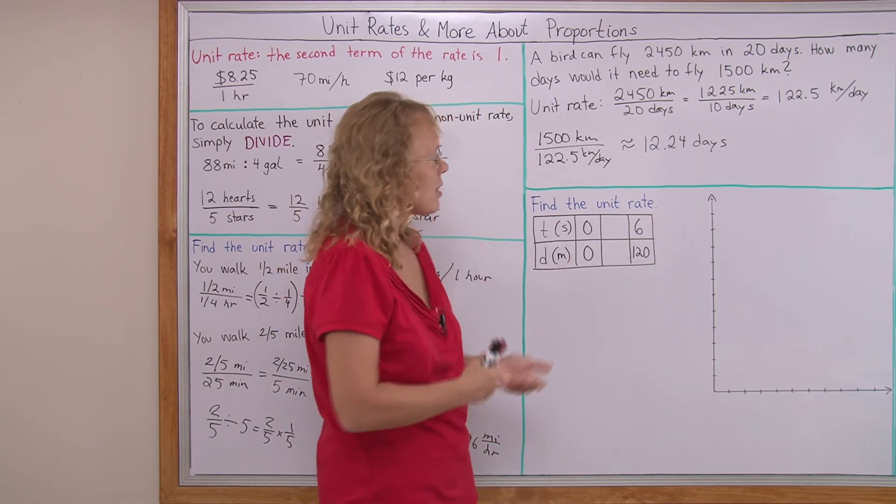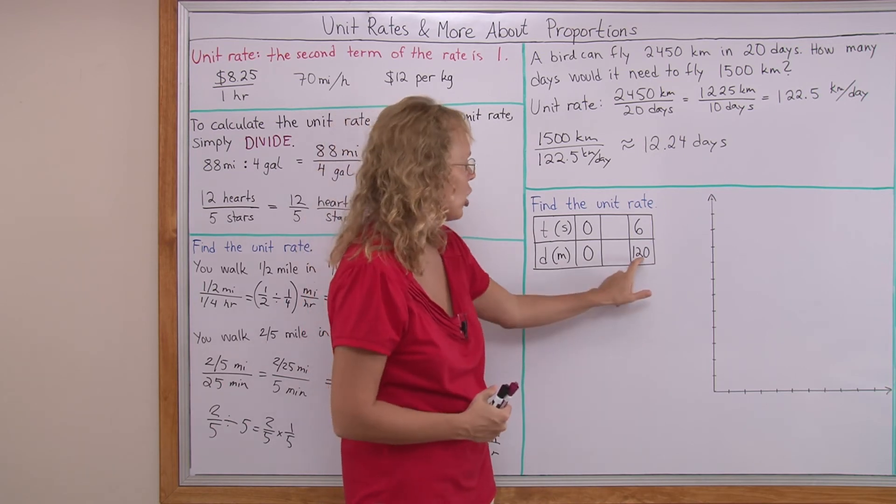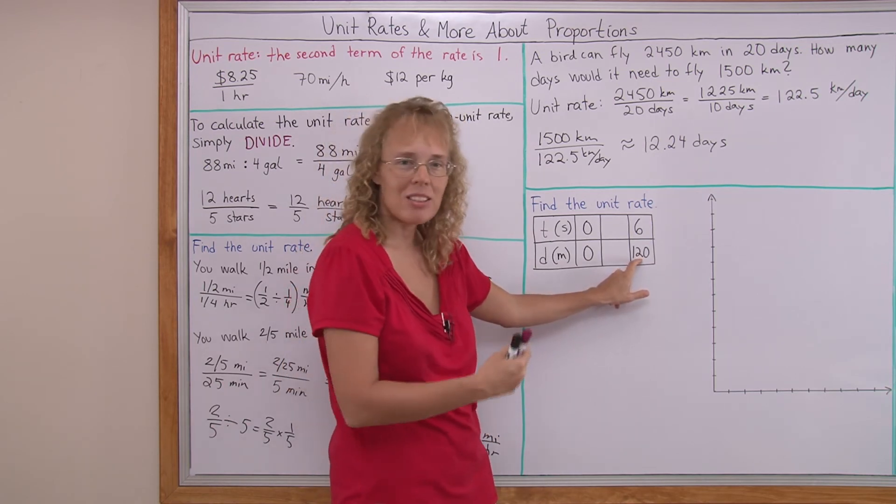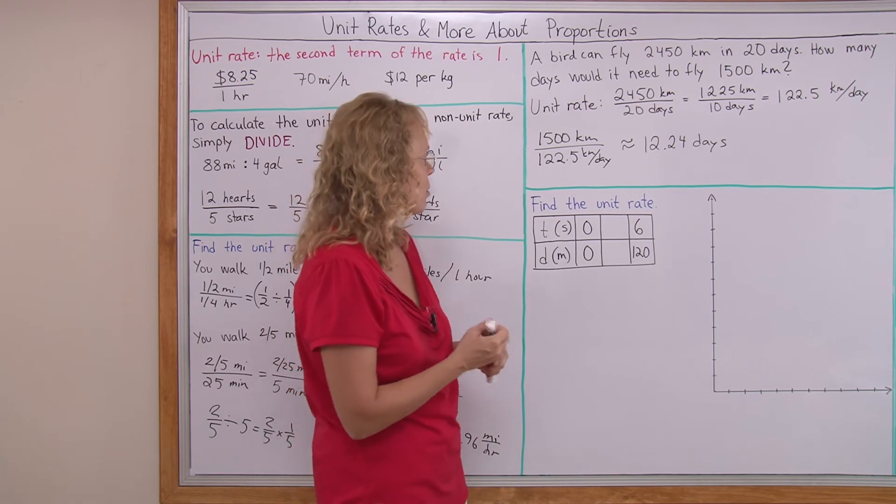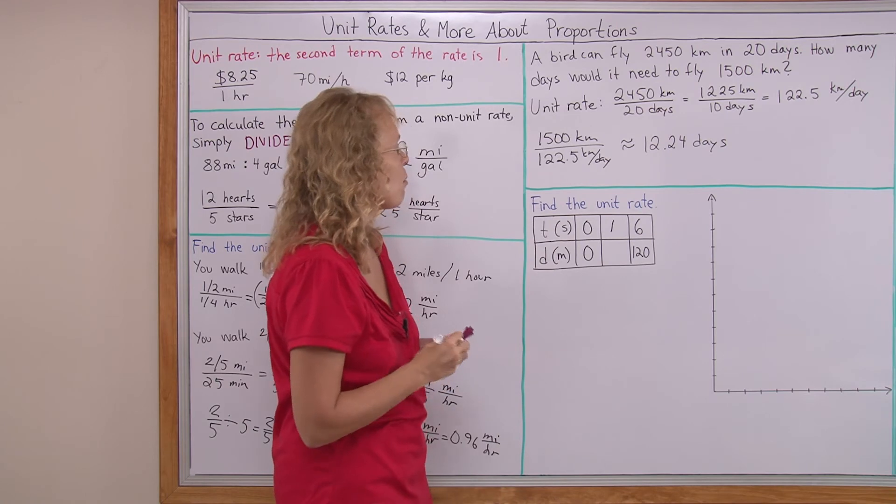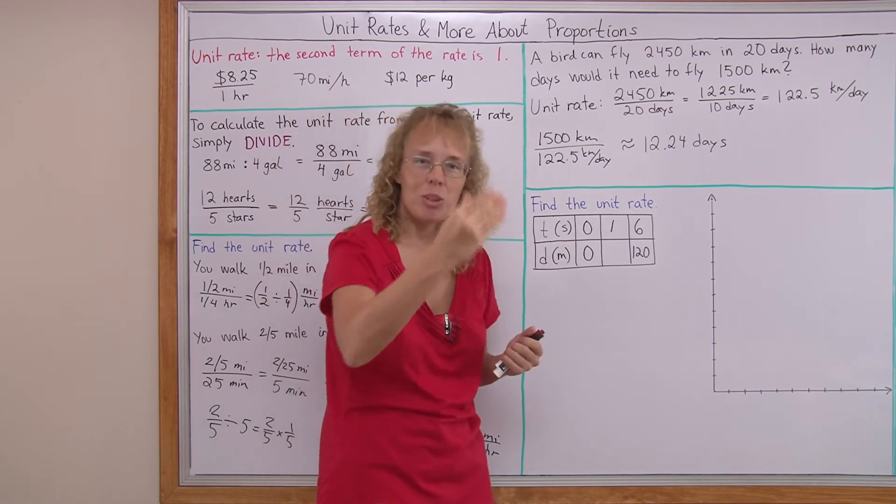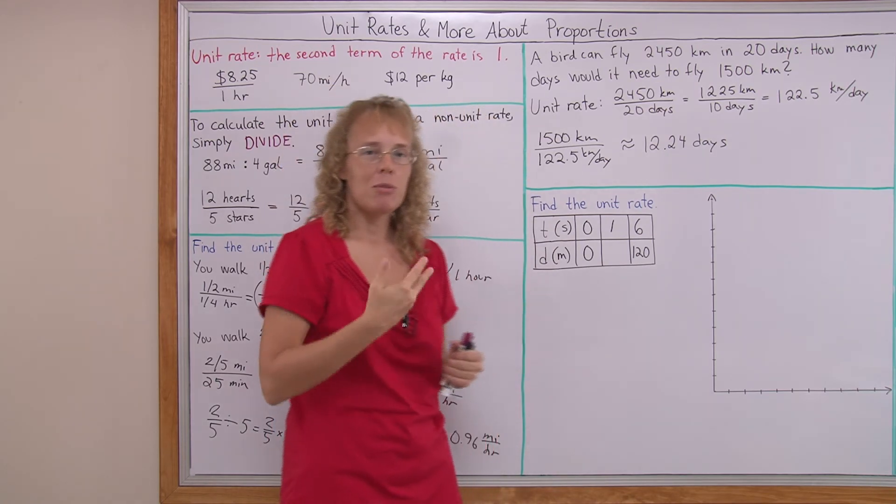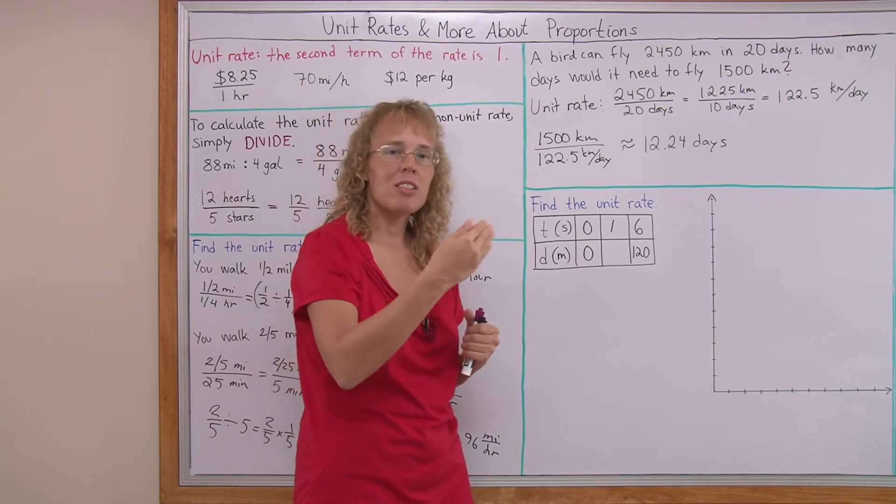But at six seconds, this thing or person has gone 120 meters. What's the unit rate? Like I said, per one, in this case, one second. How many meters per one second? Because we are talking about speed.